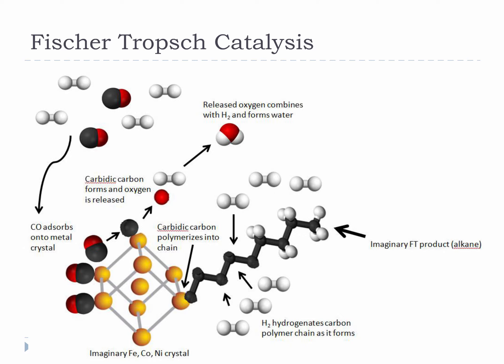Several transition metals, including iron, nickel, and cobalt, are capable of catalyzing Fischer-Tropsch reactions when they are exposed to carbon monoxide and hydrogen at high temperatures. When heated, these metals adsorb carbon monoxide and strip it of its oxygen, leaving something called a carbidic carbon on the surface. This carbidic carbon combines with other carbidic carbons and begins polymerizing them into a long chain, nearly the same process as carbon nanotubes. Under the high hydrogen pressures, this chain of carbons gets hydrogenated into long alkanes and alkenes. The oxygen that the carbon monoxide lost is turned into water by the hydrogen, releasing heat.